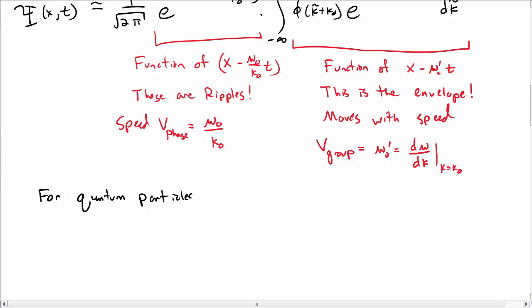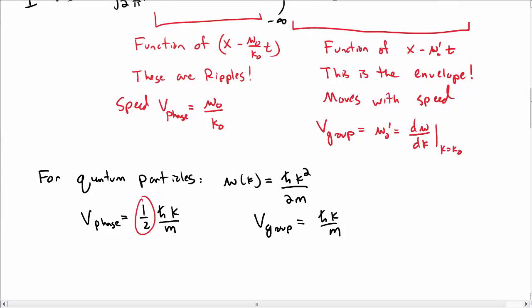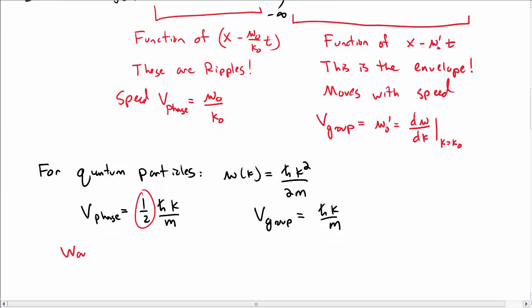Remember, for quantum particles, we have a specific dispersion relation: omega as a function of k is h-bar k squared over 2m. So that tells us that the phase velocity for quantum particles is one-half h-bar k over m, and the group velocity for quantum particles is h-bar k over m. So there's a difference of a factor of one-half. In particular, we have wave packets in quantum where the envelopes move actually at twice the speed as the ripples.